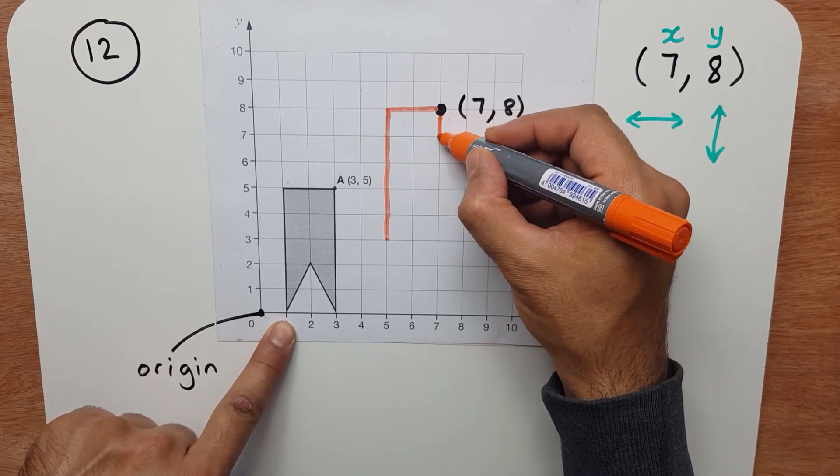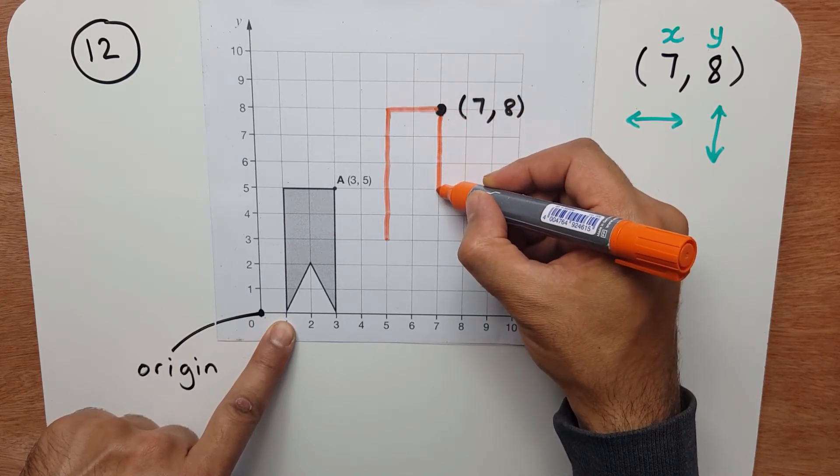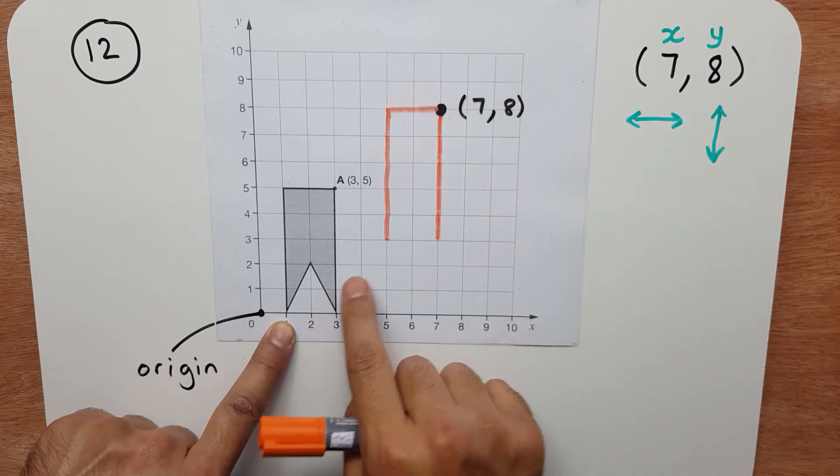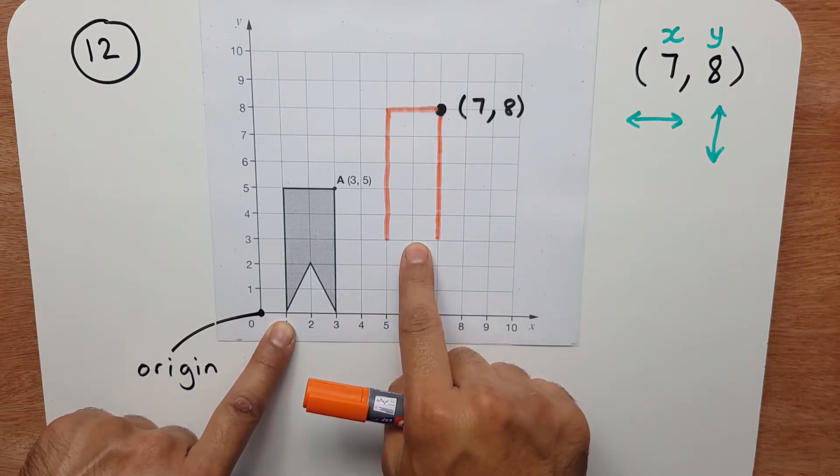So I can do the same thing here: 1, 2, 3, 4, 5. So now that shape and that shape are looking similar now.